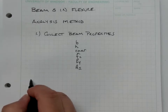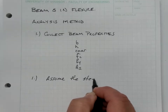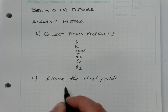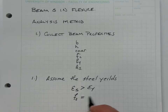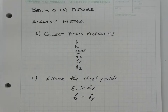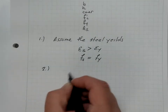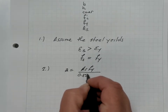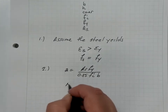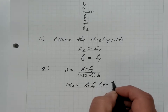Step one: we assume the steel yields. As a result, the strain in the steel exceeds the yield strain, and therefore the stress in the steel is equal to the yield stress. After that, A is equal to A_S F_Y over 0.85 F'_c B.